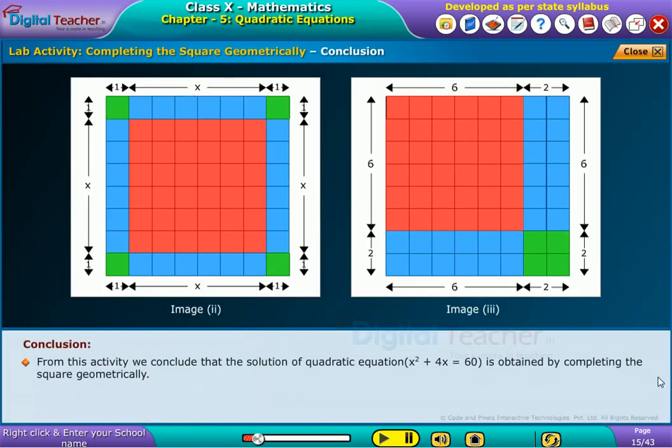From this activity, we conclude that the solution of quadratic equation x² + 4x = 60 is obtained by completing the square geometrically.